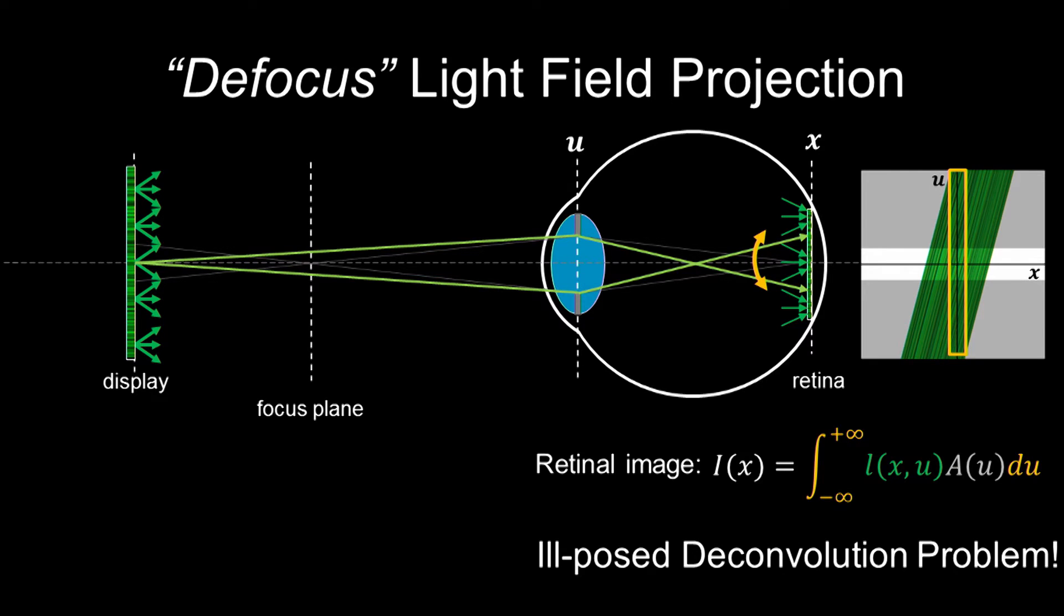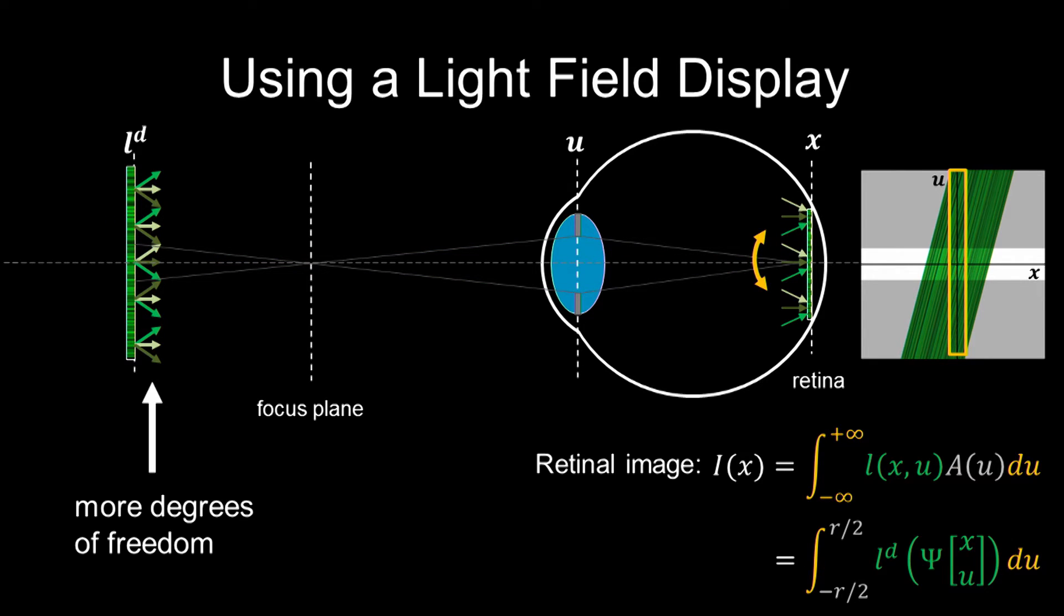Using a true light field display will allow us to control the angular variations, which give us more degrees of freedom to solve the problem. We can formulate the linear system.